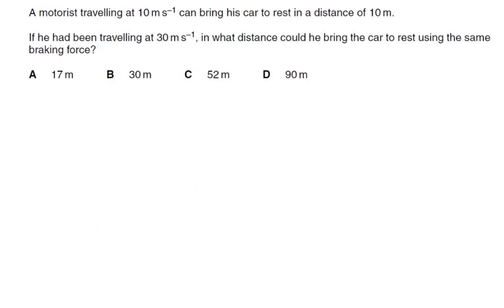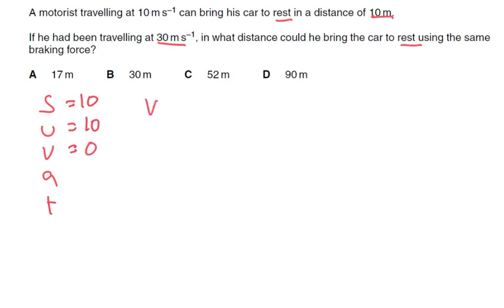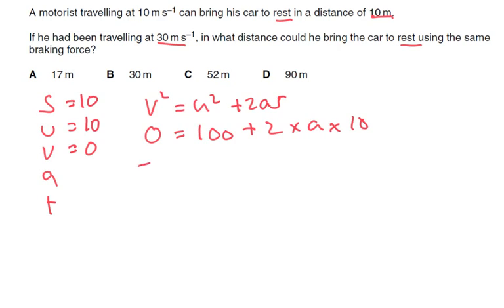A motorist travelling at 10 m/s can bring a car to rest in a distance of 10 meters. We want to find the deceleration using SUVAT: S = 10, U = 10, V = 0. Using V² = U² + 2AS: 0 = 100 + 2·A·10, so A = −100/20 = −5 m/s². So the deceleration is 5 m/s².